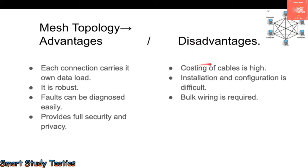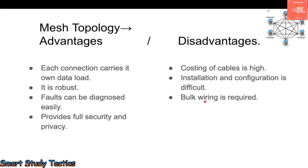Disadvantages of mesh topology: the cost of cables is very high because multiple cables are required per computer — approximately five to six cables per system, so the total cable count multiplies quickly. Installation and configuration is difficult, requiring a skilled network designer. Bulk wiring is required, making it complex to implement.